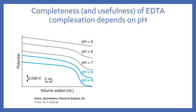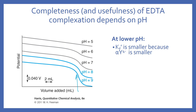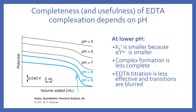Because of this pH dependence, the completeness and usefulness of EDTA complexation really depends on pH. This titration curve shows that at pH 5 you can't follow anything, but using more basic pH produces a clear inflection point. At lower pHs, a smaller fraction of EDTA is in the Y4- form, giving a much smaller Kf prime, so complex formation is less complete and the EDTA titration is less effective.